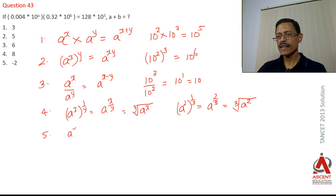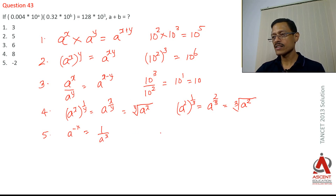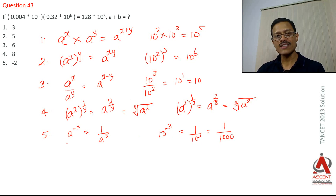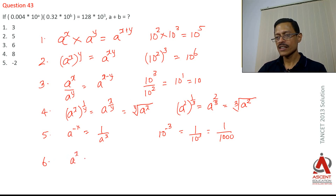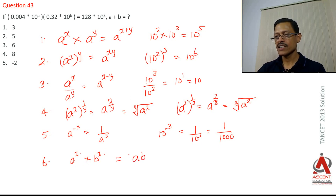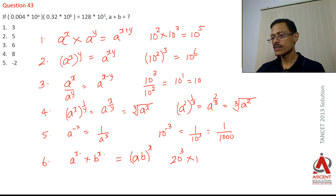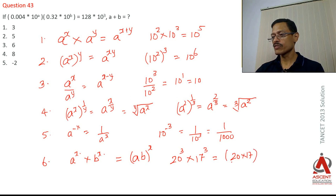A couple more rules. a^(−x) equals 1/a^x. So 10^(−3) is equal to 1/1000. The last rule: a^x × b^x — when the power is the same but bases are different — you can multiply the bases: a^x × b^x = (ab)^x. For example, 20³ × 17³ = (20 × 17)³ = 340³.